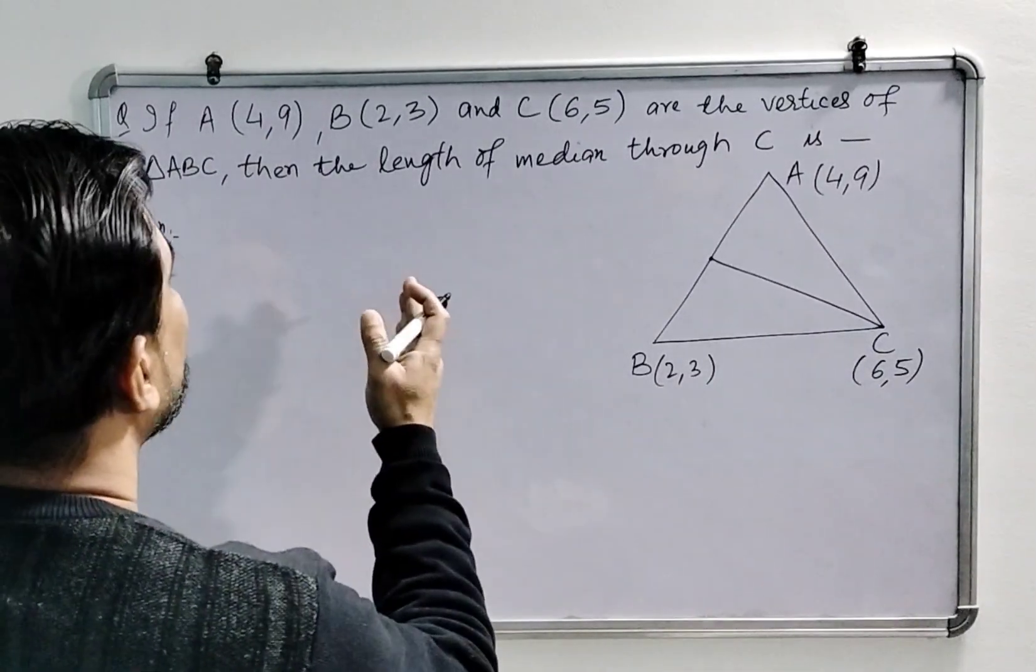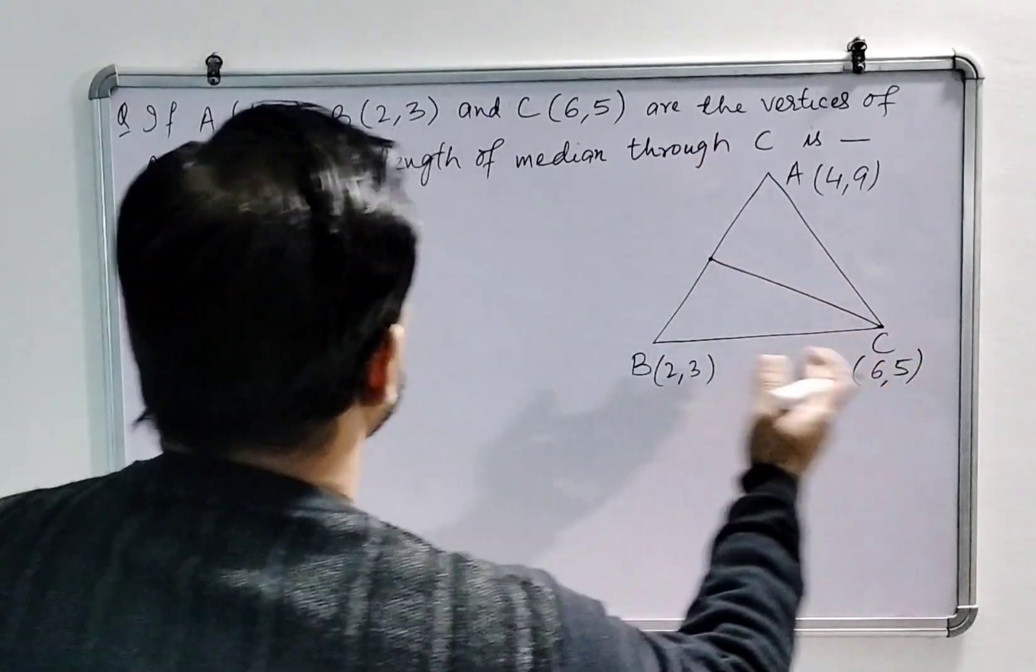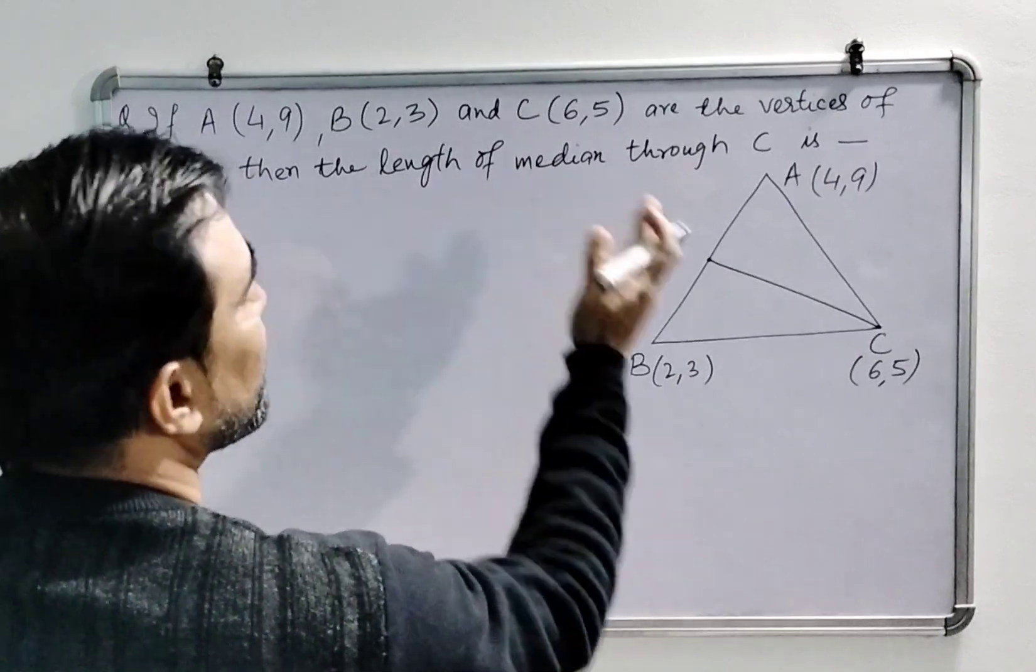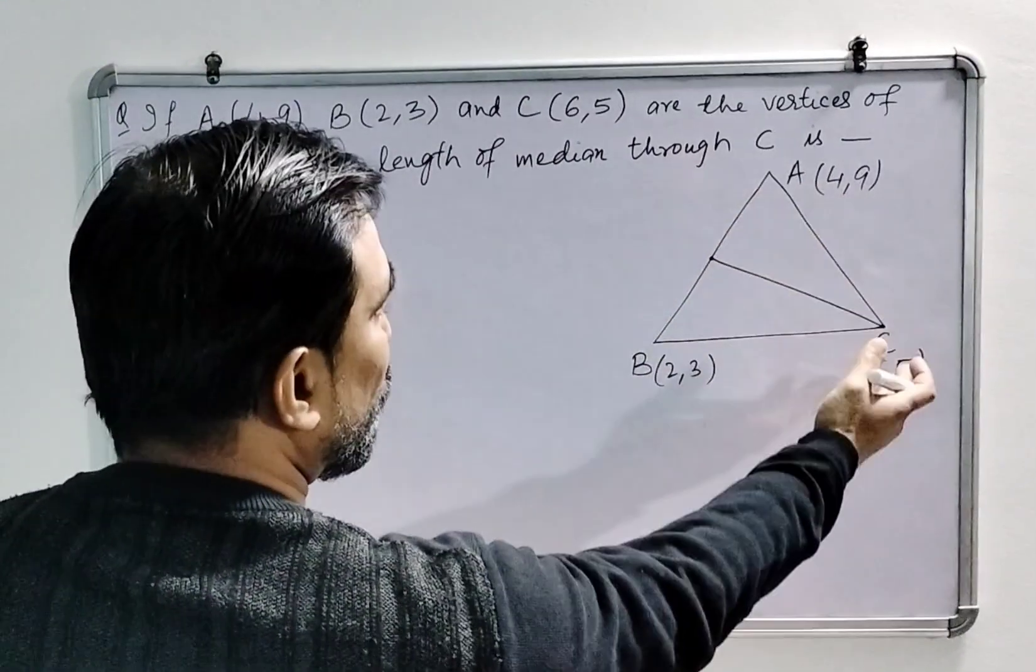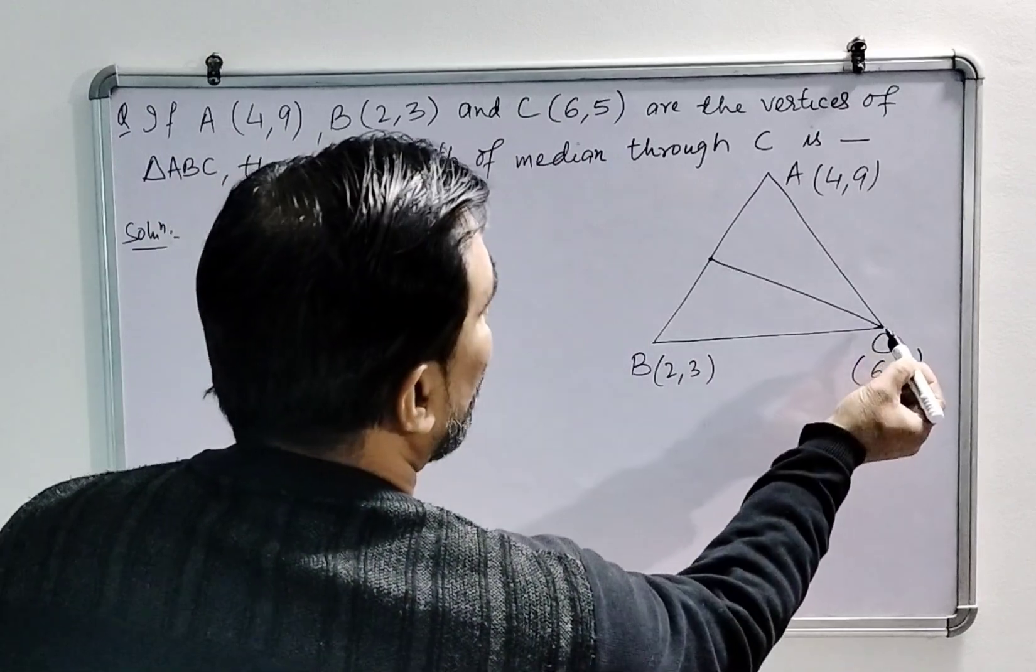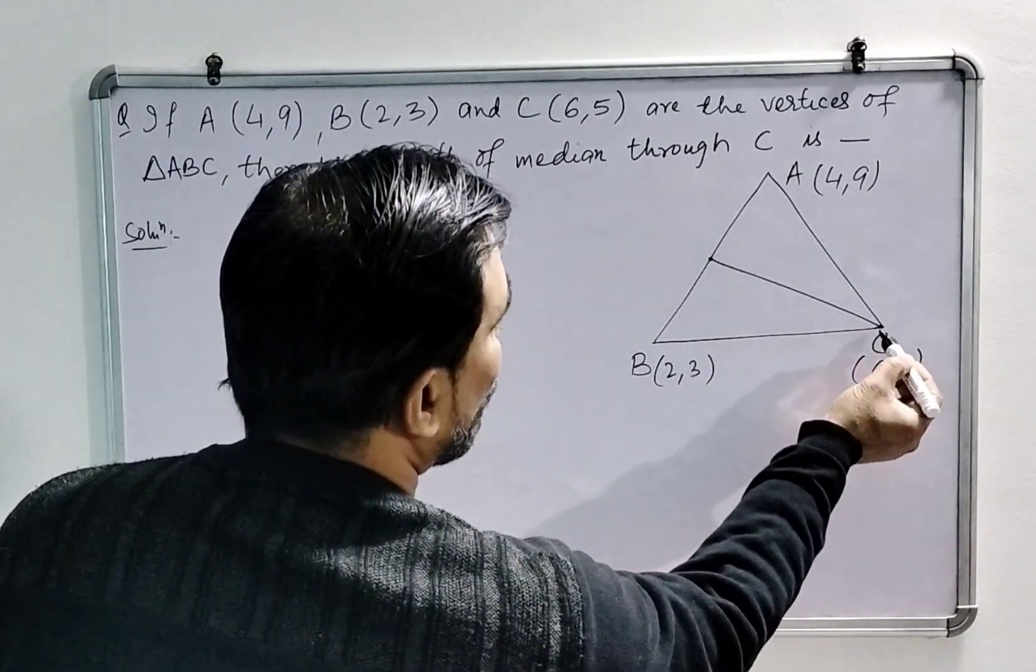Welcome students, we have a question here in which it is given that triangle ABC has three vertices and the coordinates are shown here. We have to find the length of median which is drawn through point C.